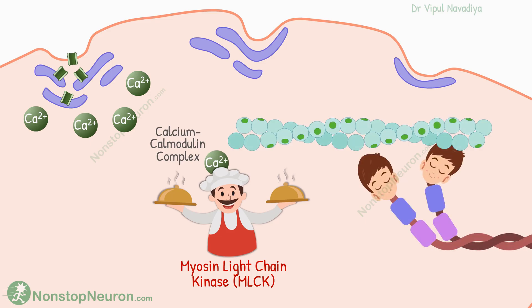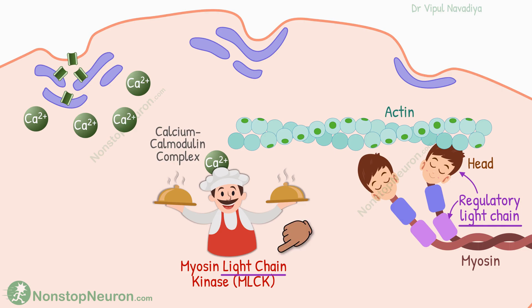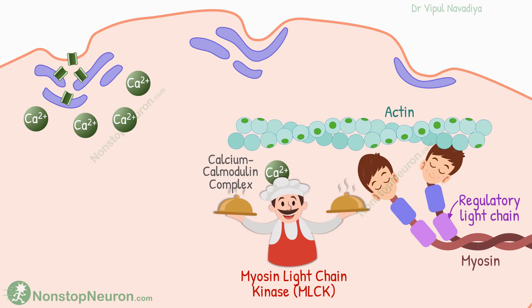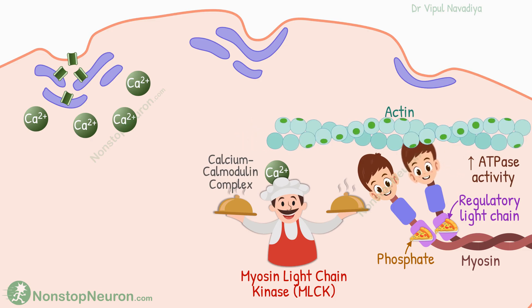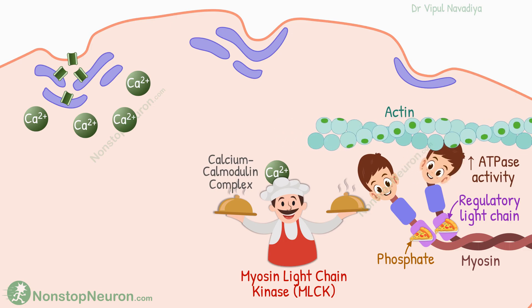We have an enzyme called myosin light chain kinase. The calcium-calmodulin complex activates this enzyme. The myosin molecule has a regulatory light chain in the neck region, which regulates the activity of the myosin head. This kinase phosphorylates the regulatory light chain, which increases the ATPase activity of myosin. The ATPase activity is part of the myosin cross-bridge cycle, so when this activity is present, the cross-bridge cycle can occur and continues as long as the regulatory light chain remains phosphorylated.